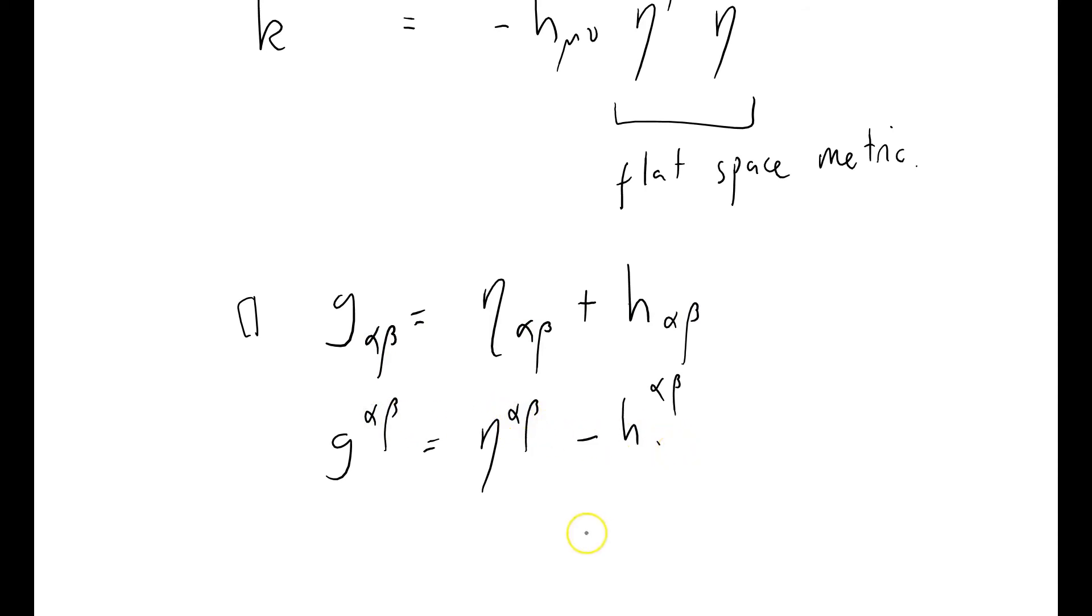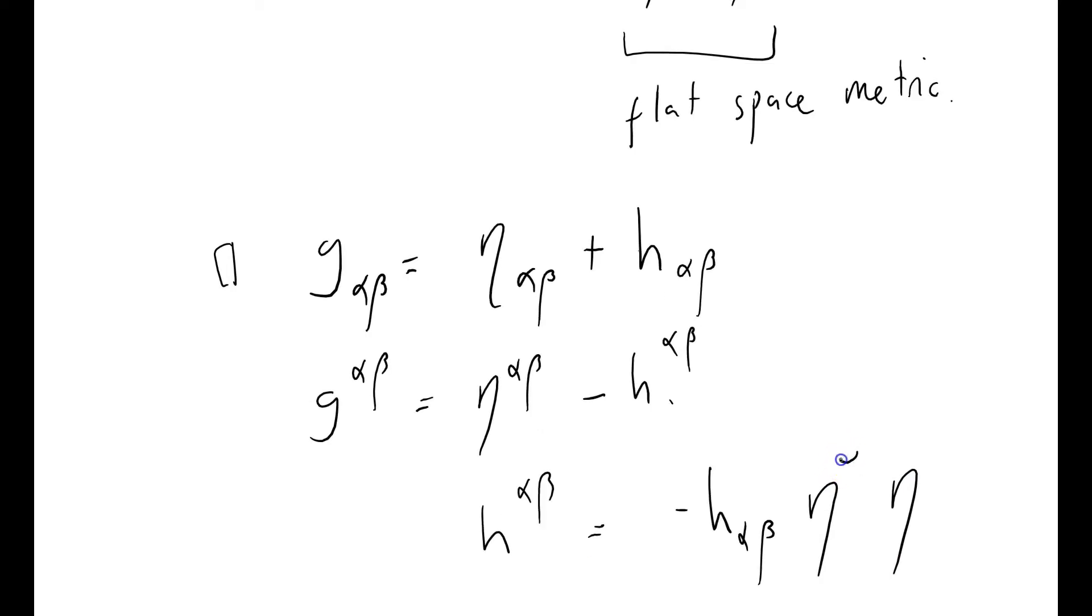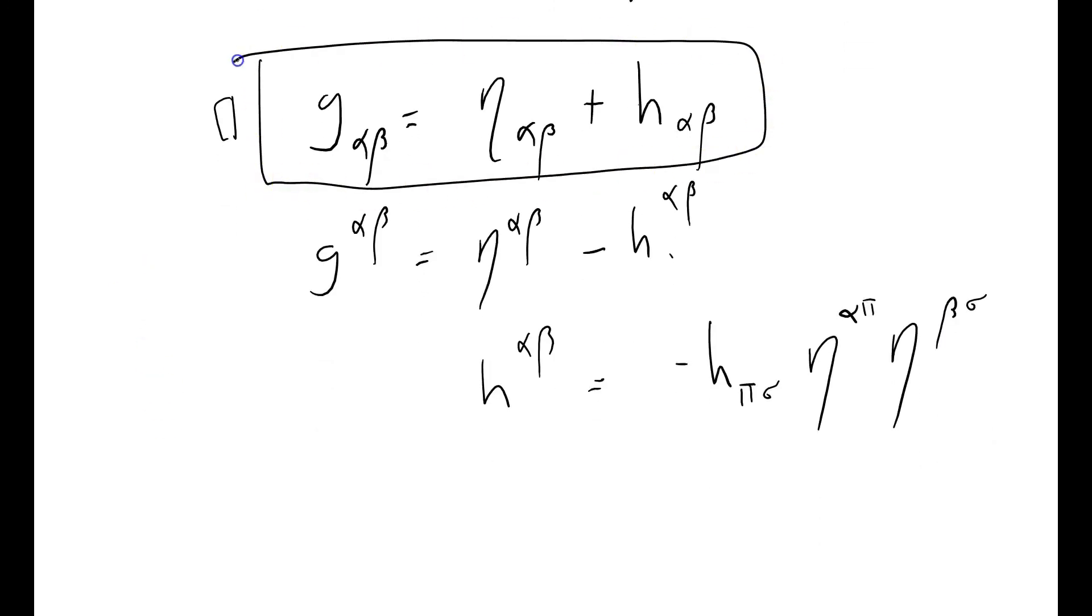And I wrote them in the wrong place. I wrote them down there. Where H alpha beta upstairs equals, from this formula, minus H pi sigma downstairs, eta alpha pi eta beta sigma. Let's get this right. We'll contract on an alpha. We'll contract on a beta. You see, I'm getting it wrong again. We've got alpha and beta on the upstairs. And so I need alpha and beta free on the upstairs. And I've got them summed down here. They should be summed with two other dummy indices, which I'll call pi and sigma. So that's quite nice. We've got a downstairs metric tensor. We've got an upstairs metric tensor. And the components are related by this formula here, which amounts to saying that we can raise and lower the indices using the flat space metric. We don't need to use G alpha beta to raise and lower the indices. We can get away with using the flat space metric. That's wonderful. I'm going to stop there.